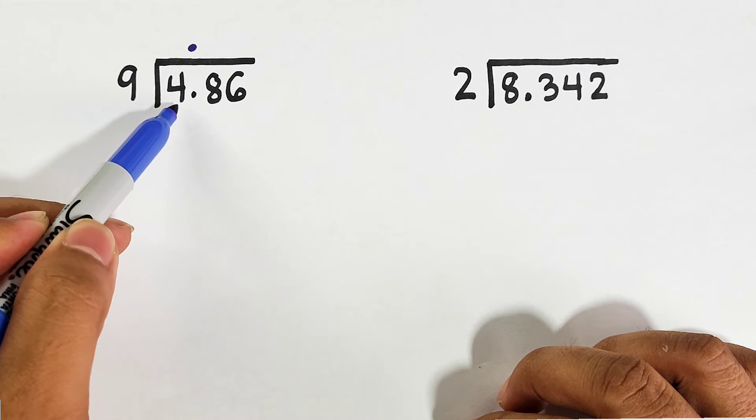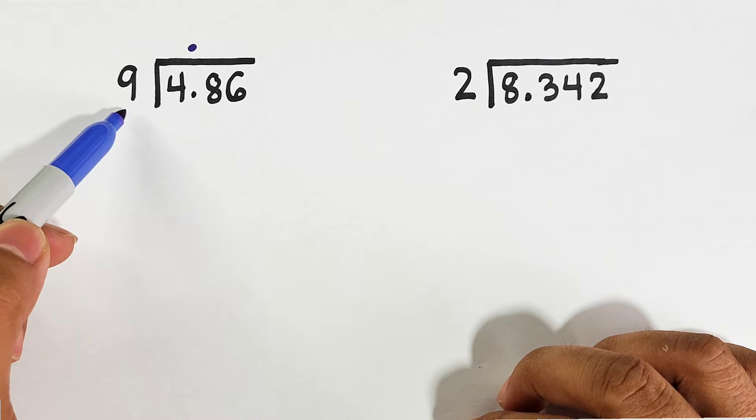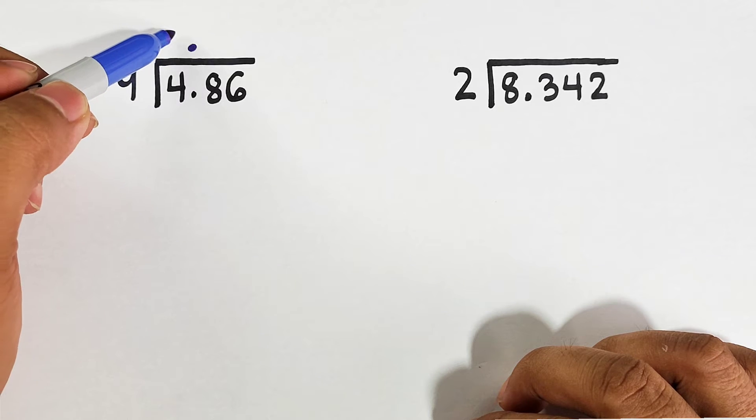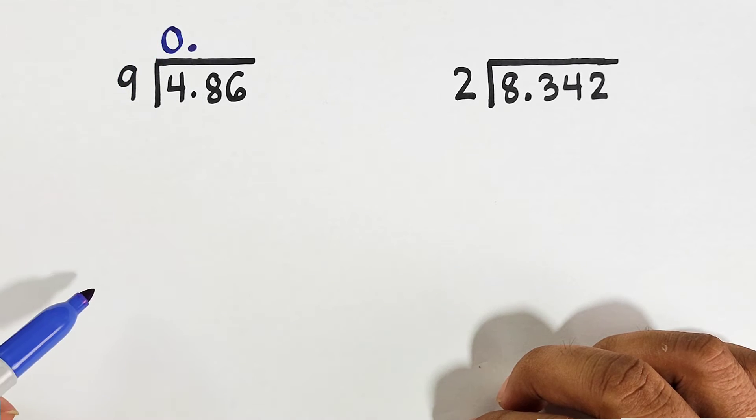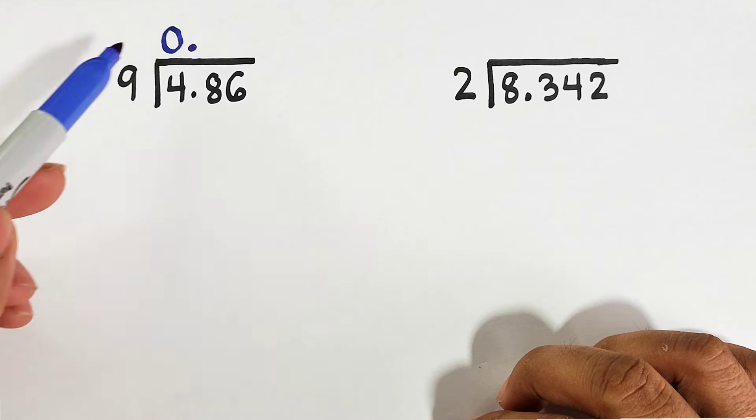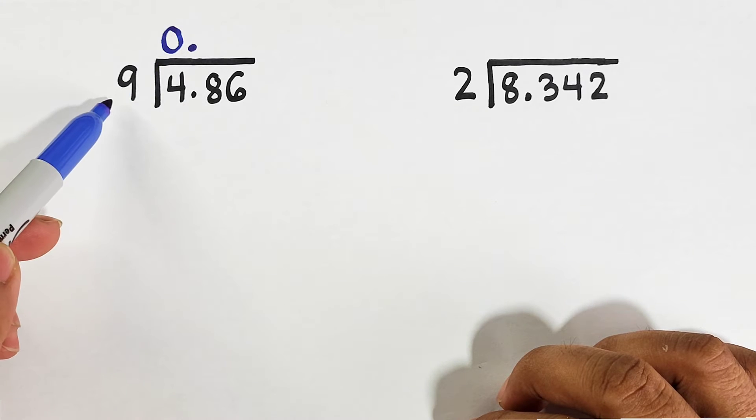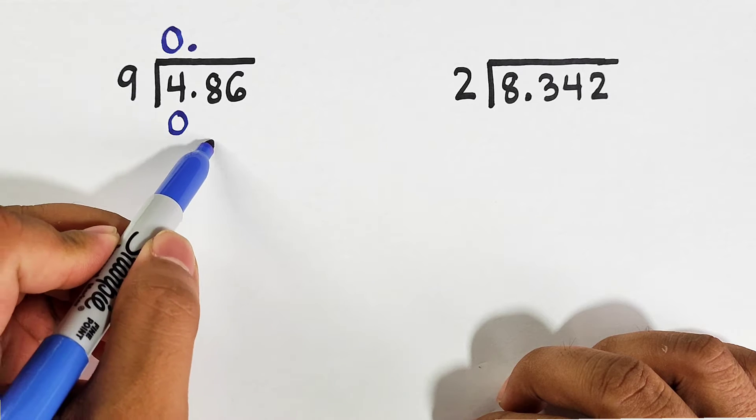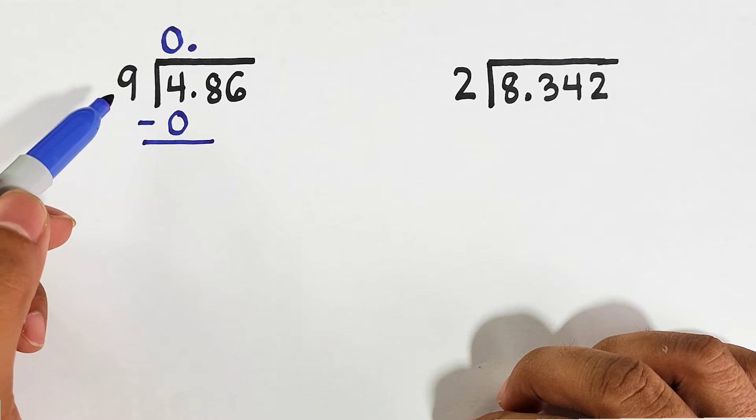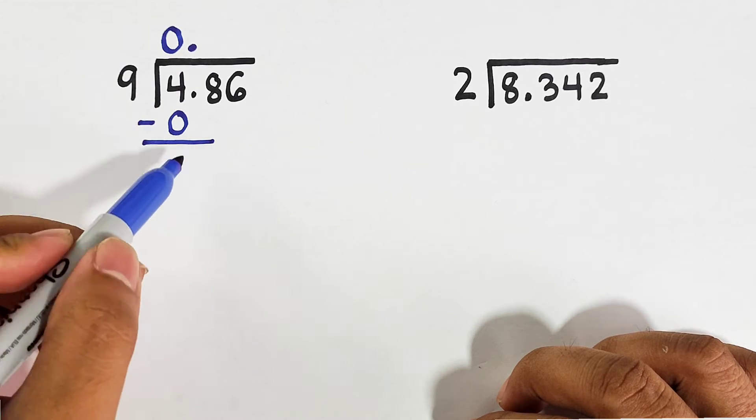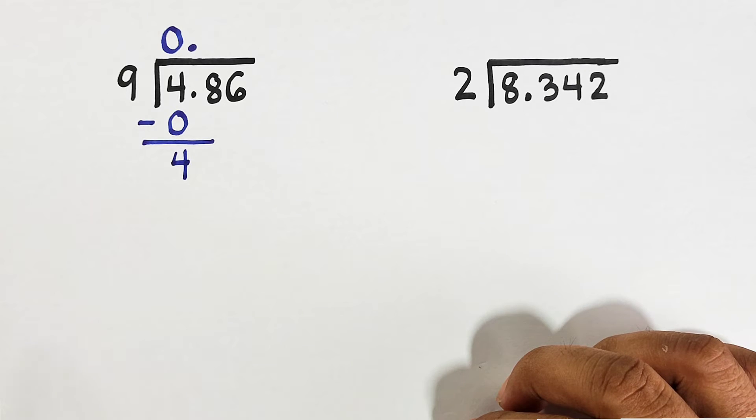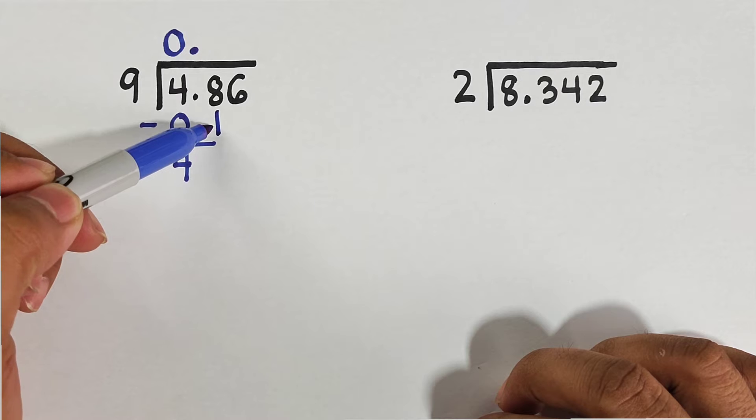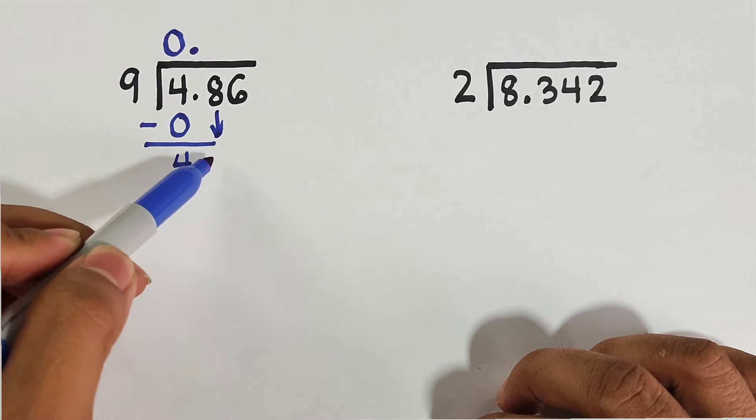Let's try. We have 4 divided by 9, so it's not possible. It is 0. 0 times 9 equals 0. So what we have here is we will subtract 4 minus 0, that is equal to 4.